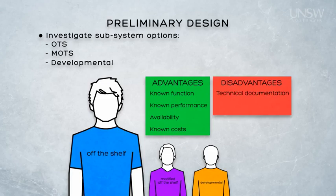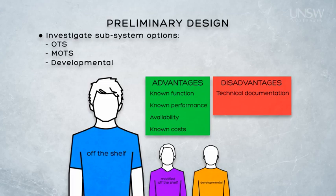However, there are some things to think about. The technical documentation associated with off the shelf systems is, in my experience, something to look out for. If we are going to use off the shelf subsystems, we must have access to appropriate levels of technical detail to allow us to integrate the subsystems, test and operate them, and train people in their use. If the documentation is unsatisfactory, then this must be considered when making the design decision.